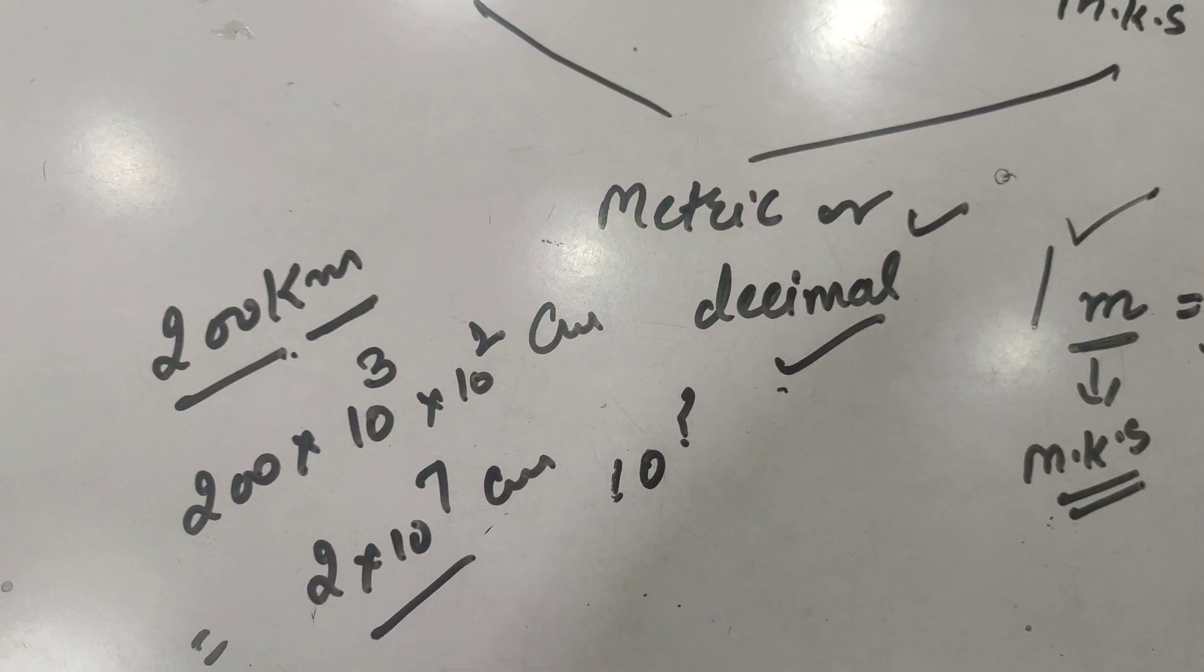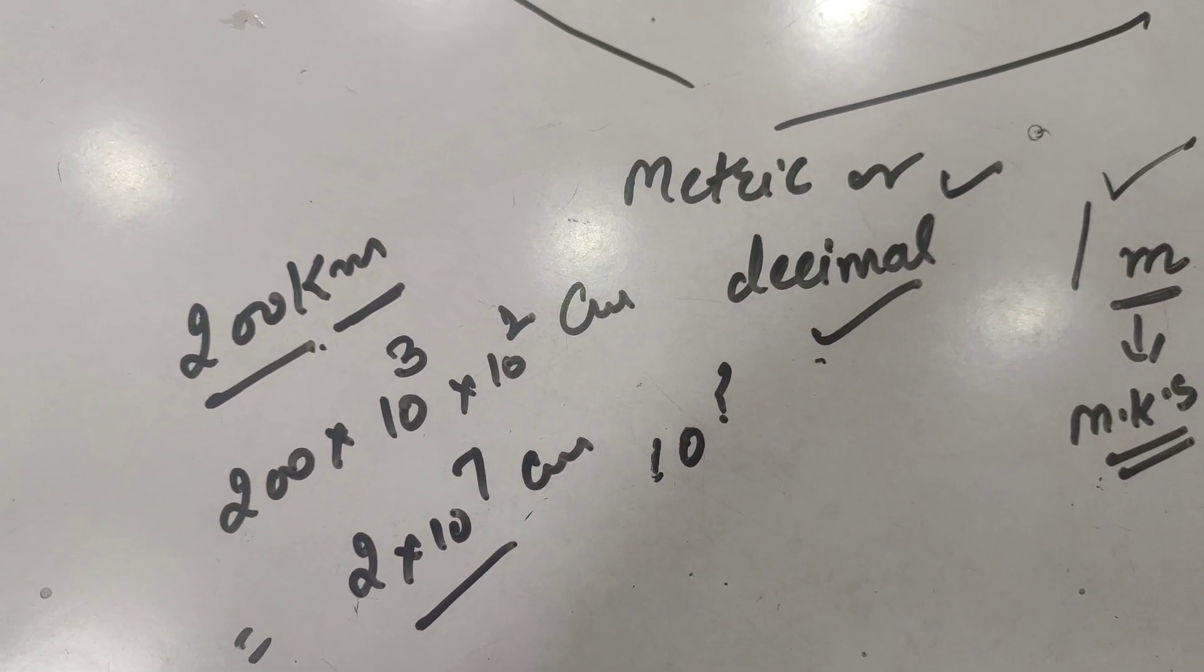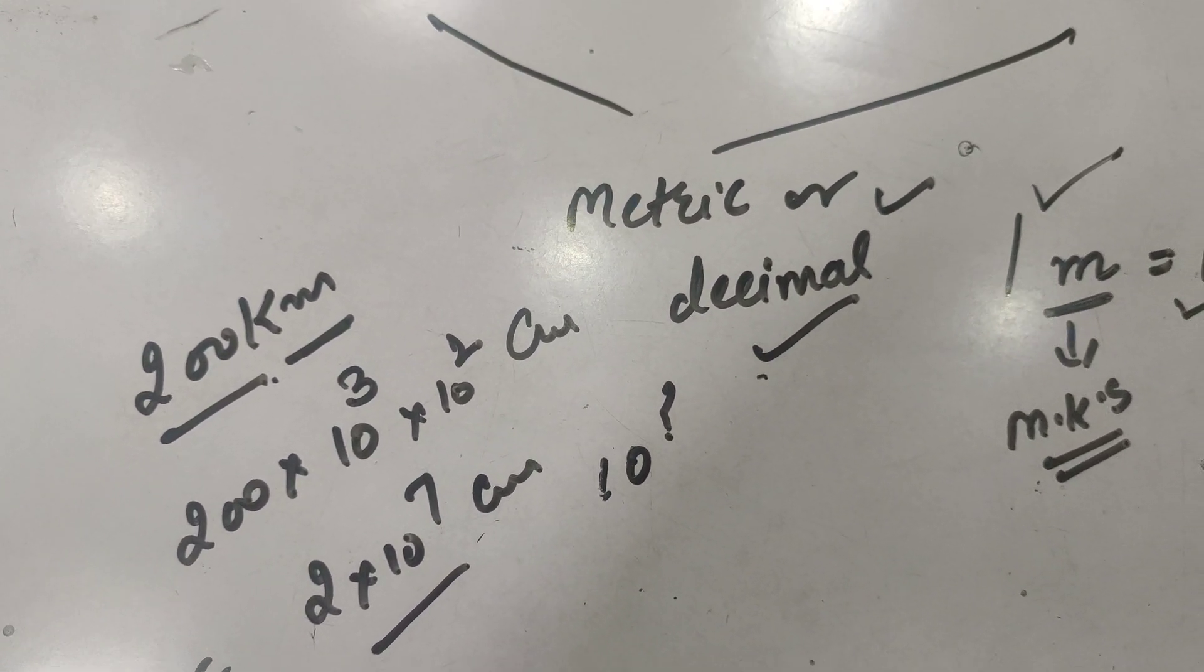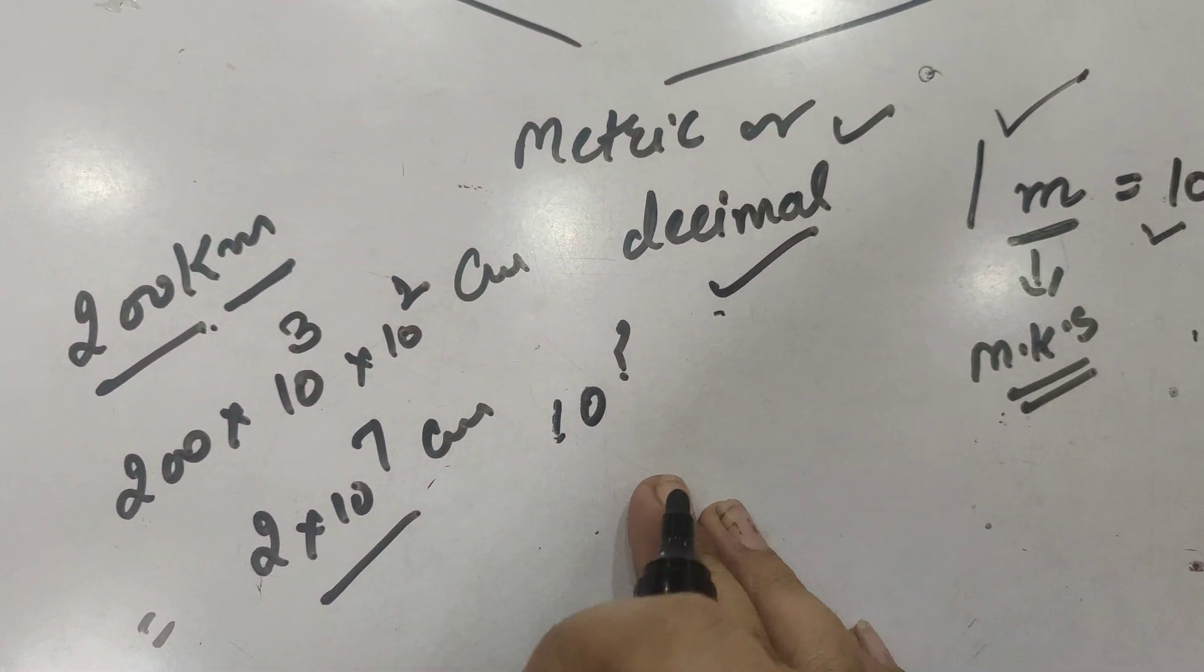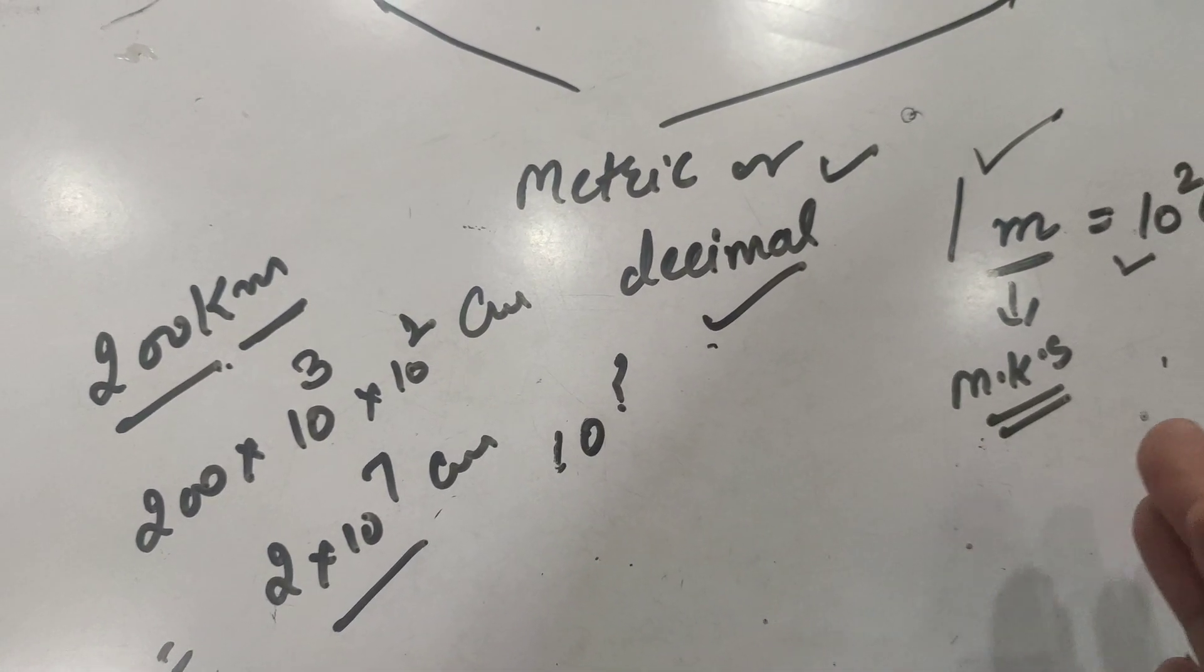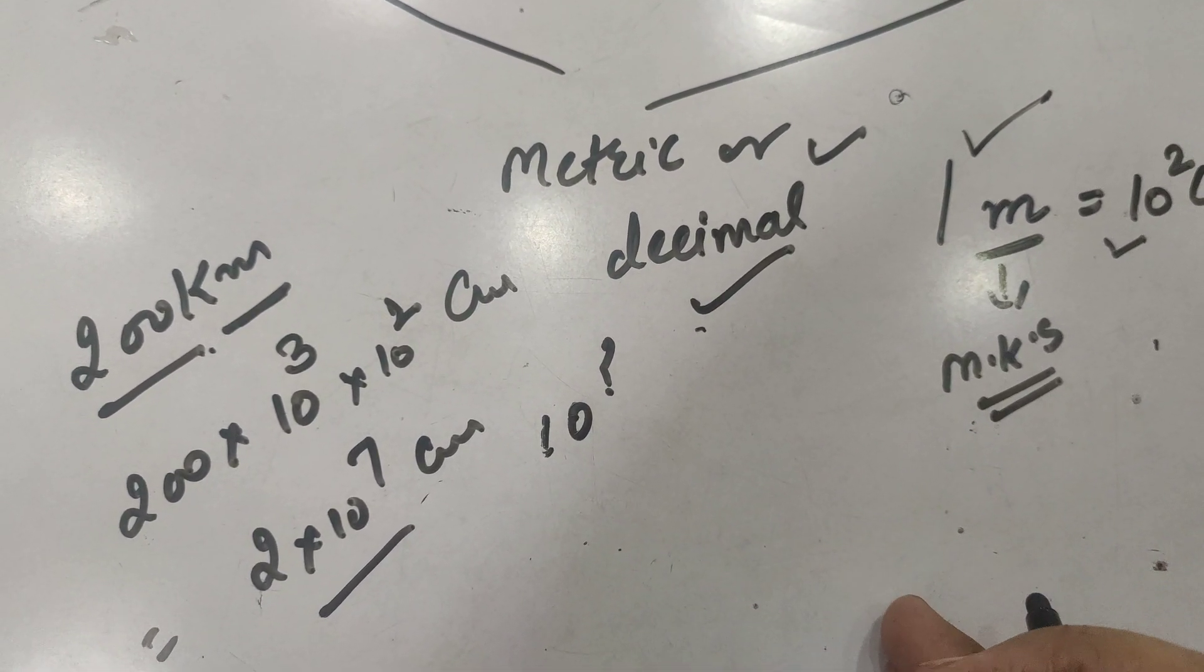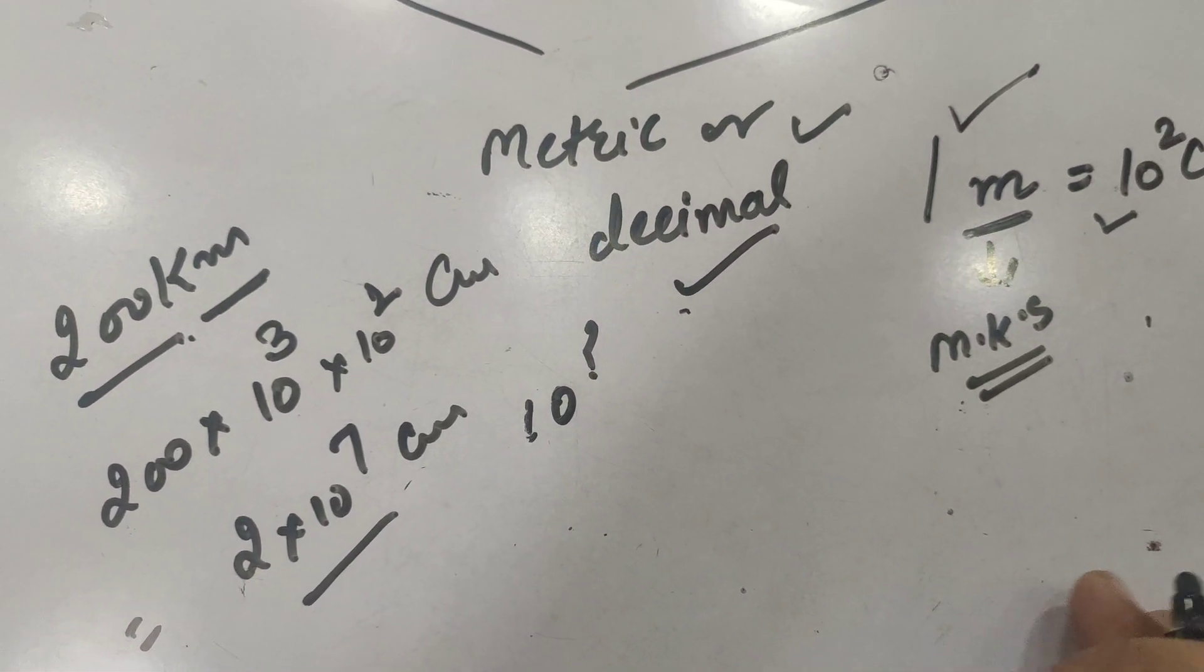that we usually don't write the units in the CGS system because in that case the calculation becomes so clumsy. So whenever you are doing numericals, firstly you have to convert all CGS system into MKS system to create simplicity in the numericals. And this is actually the advantage of MKS system, because MKS system has a convenient...